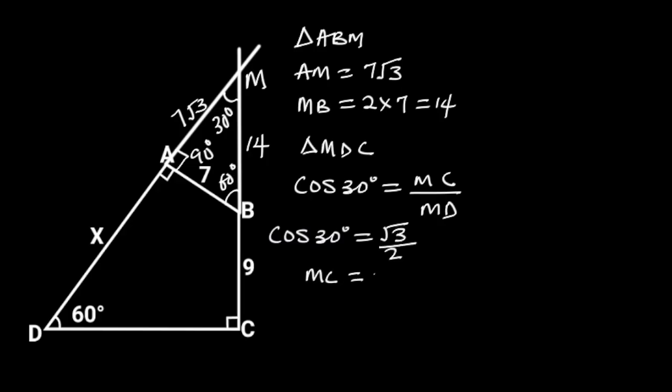MC is equal to 14 plus 9, which is equal to 23. And MD is equal to X plus 7 root 3.